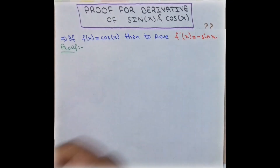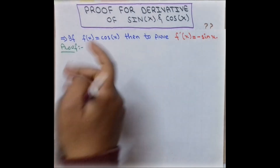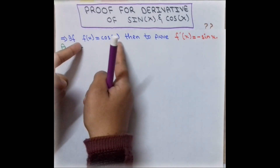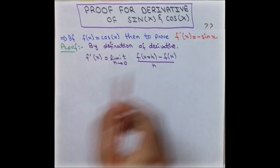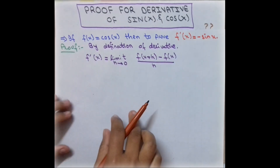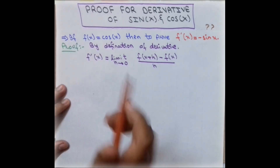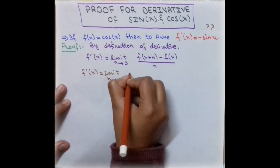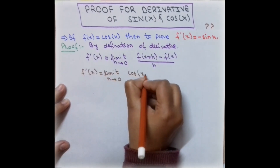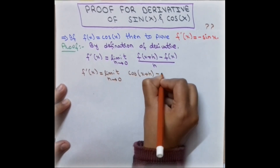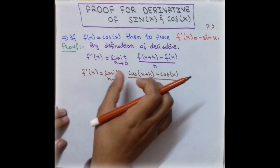Now we prove that if f(x) = cos(x), then its derivative is minus sin(x). This is what is required to prove. By the definition of the derivative, we write f'(x) as the limit as h approaches zero of [cos(x+h) minus cos(x)] divided by h.